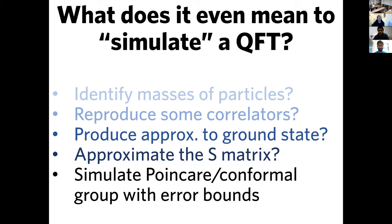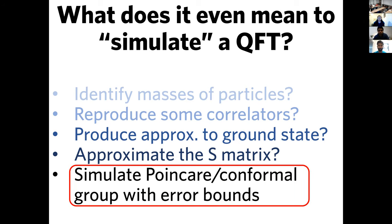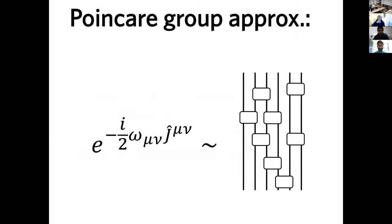I would claim that the strongest interpretation of what it means to simulate QFT is that you simulate the full action of the Poincaré group — or the conformal group — with error bounds. I'm going to explain very pictorially what one might interpret by the statement 'simulate the Poincaré group with error bounds.' I take my favorite boost, translation, or rotation, and I demand that I can write down a quantum circuit that approximately simulates the action of that boost, translation, or rotation on some stored quantum state.